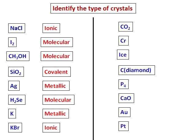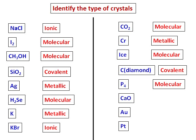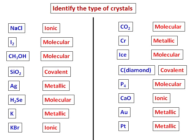KBr, potassium bromide, is ionic, therefore it's an ionic crystal. Carbon dioxide is a non-polar covalent compound, so it's molecular. Chromium is a metal, therefore metallic. Ice is basically water, therefore it's a molecular crystal. Carbon in the form of diamond is a covalent crystal. P4 is again a molecular crystal. Calcium oxide is an ionic compound, therefore it's an ionic crystal. Gold and platinum are both metals, and hence both are metallic crystals.